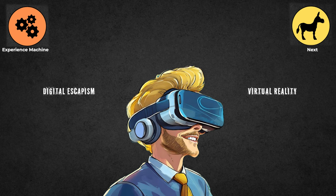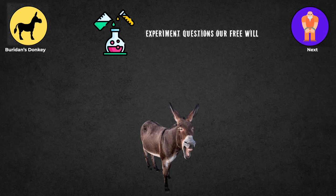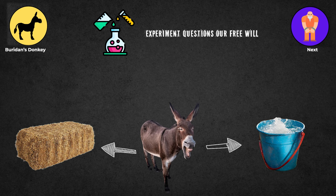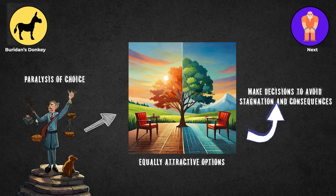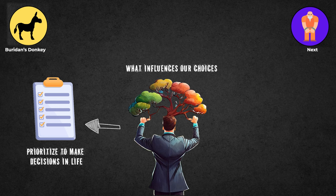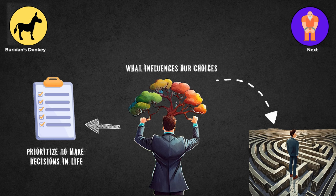Buridan's Donkey: This experiment from the 14th century questions our free will. It illustrates a donkey, equally hungry and thirsty, standing between a pile of hay and a bucket of water. Unable to decide which to choose, it ultimately dies due to indecision. This thought experiment reflects the paralysis of choice when faced with equally attractive options, emphasizing the importance of making decisions to avoid stagnation and consequences. It makes us think about what influences our choices and how we need to prioritize to make decisions in life. The scenario teaches us to take action and understand that not deciding can have bad results.